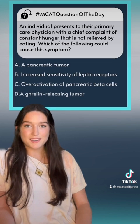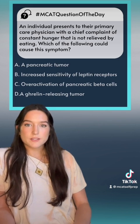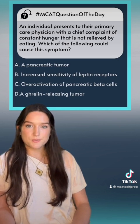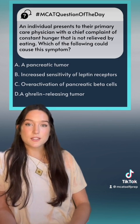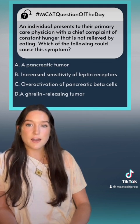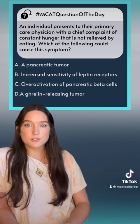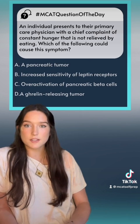Let's look at B: increased sensitivity of leptin receptors. What does leptin do? Leptin is released from our adipose tissue and travels up to our hypothalamus to tell our brain that we have enough fat stored — it's time to stop eating. We can mark this answer as wrong because our patient presents with constant hunger.